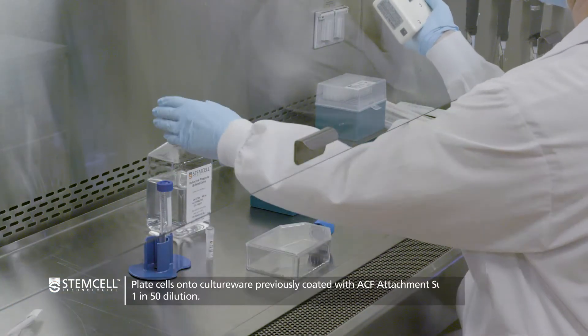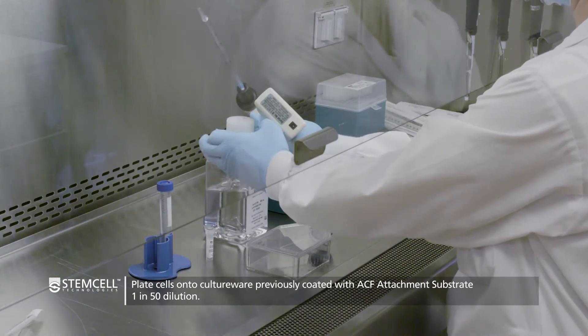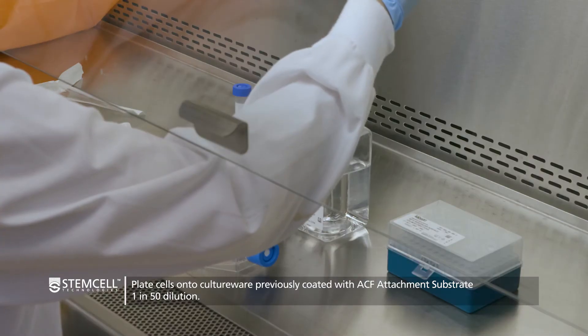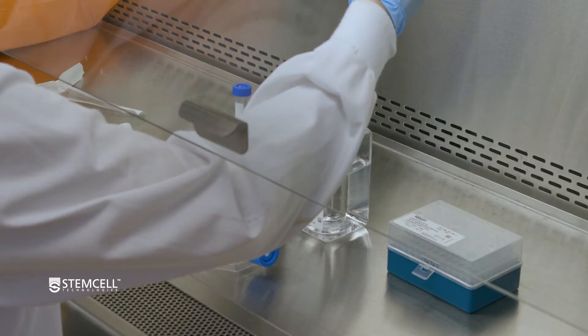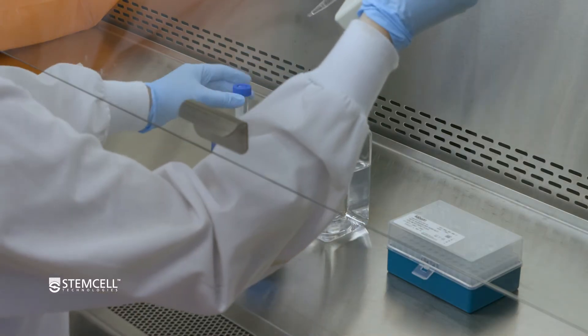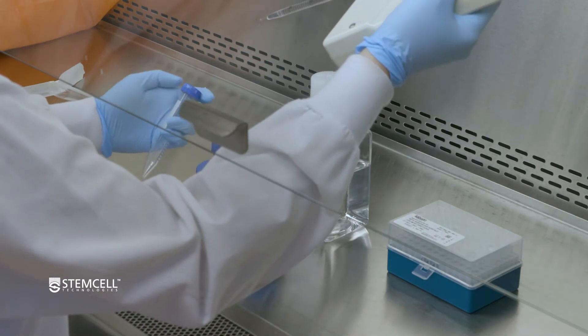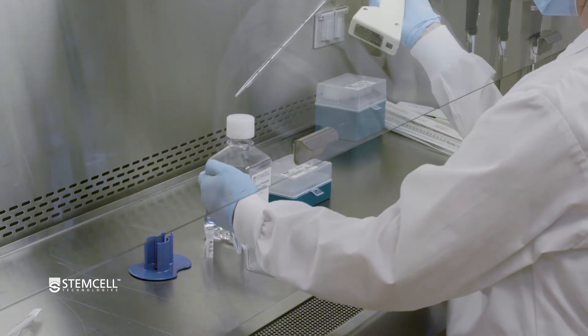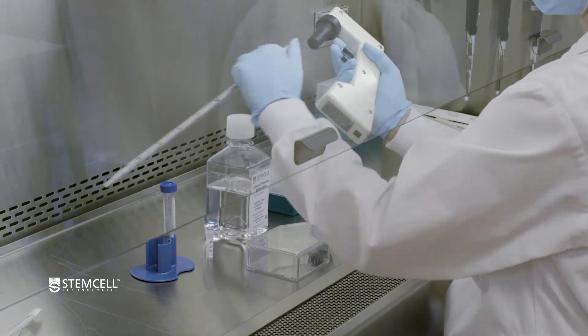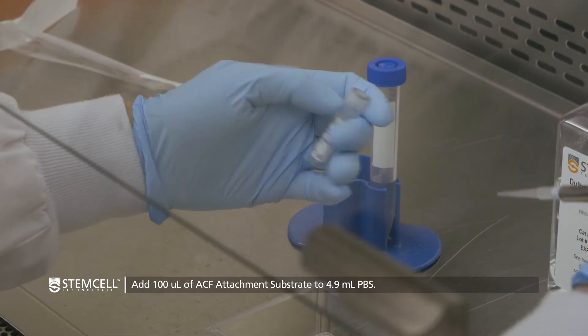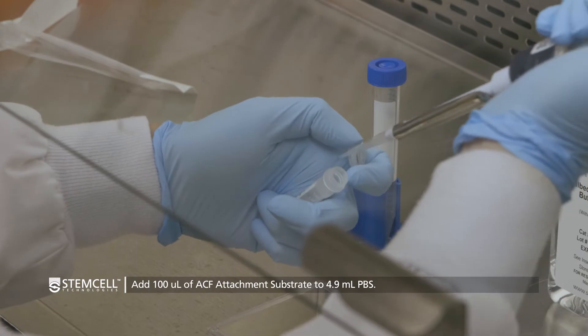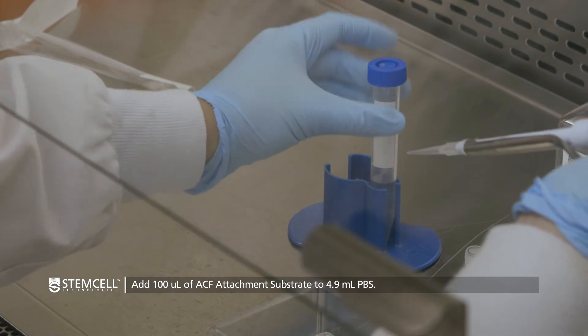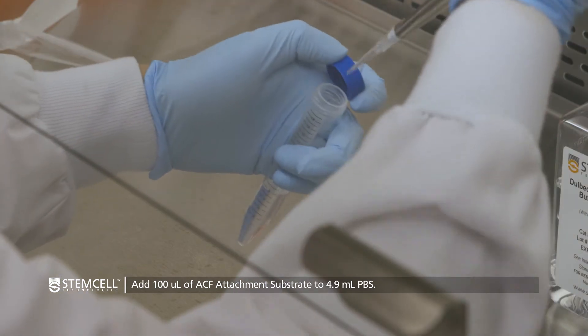Before you begin, coat the culture wear with ACF attachment substrate diluted 1 in 50 in PBS. To coat one T75 flask, add 100 microliters of ACF attachment substrate to 4.9 milliliters of PBS in a 15 ml conical tube.